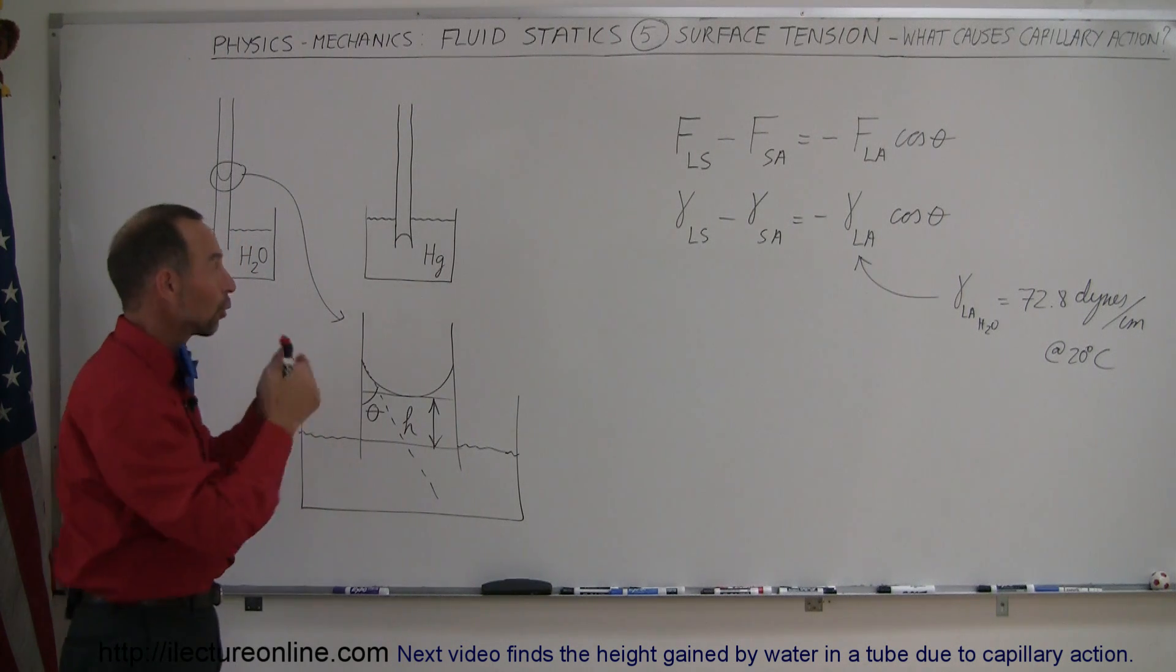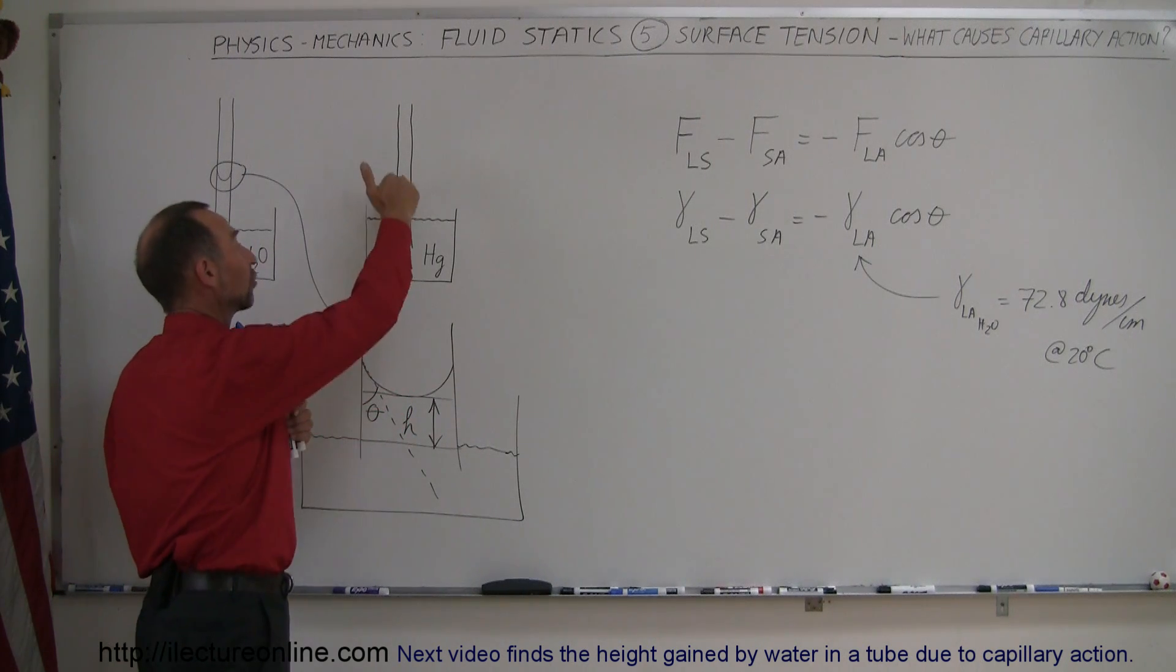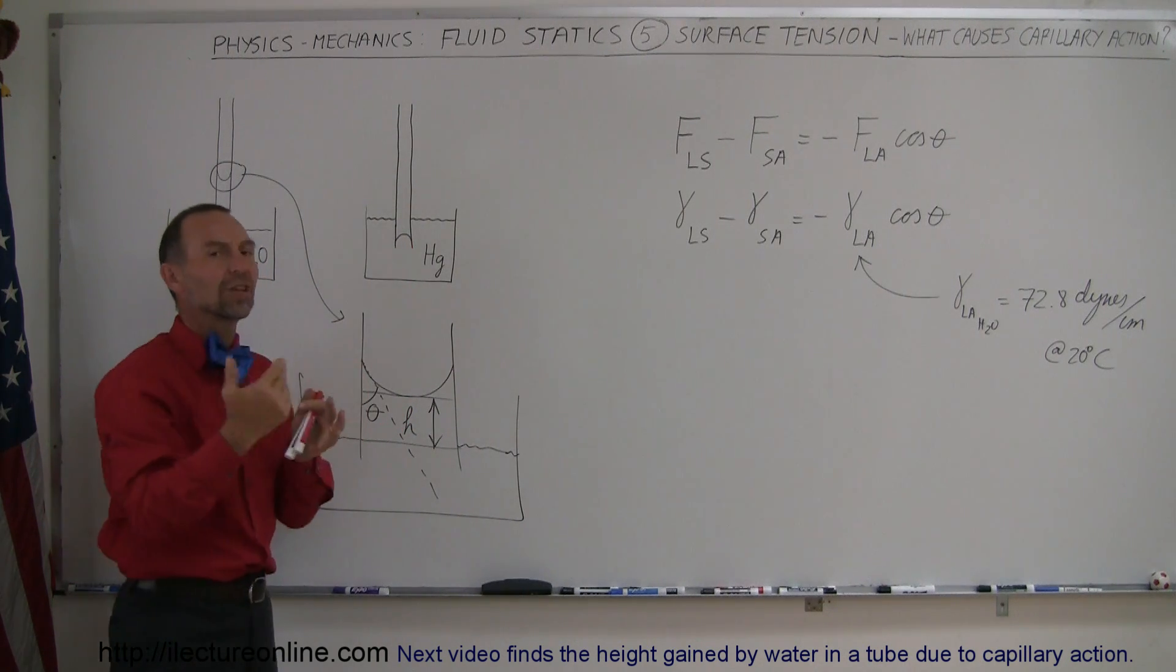The reason for that is that the mercury molecules will attract each other more greatly. That would be the force of cohesion is greater for mercury than the force of adhesion between the mercury and the glass. So therefore, the capillary action works then in the opposite direction.